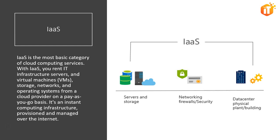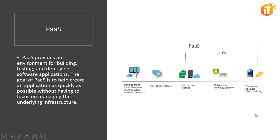The next type of cloud service is platform as a service. PaaS provides an environment for building, testing, and deploying software applications. The goal of PaaS is to help create an application as quickly as possible without having to worry about managing the underlying infrastructure. For example, when deploying a web application using PaaS, you don't have to install an operating system, web server, or even system updates. PaaS is a complete development and deployment environment in the cloud, with resources purchased from a cloud service provider on a pay-as-you-go basis and accessed over a secure connection.